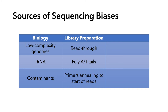The second source of sequencing bias is library preparation. Read-through occurs when the insert size is shorter than the sequence length, so the sequence reads through to the adapter. Poly-A tails can be left over from library prep — these are problematic because they can create links between totally unrelated sequences, generating chimeras. In RNA-seq especially, primers can anneal to the start of the reads during library preparation.